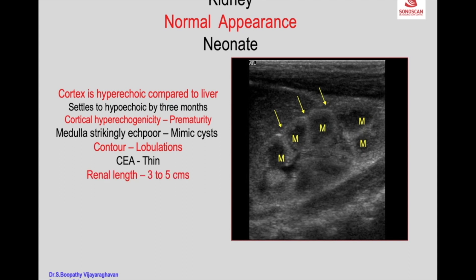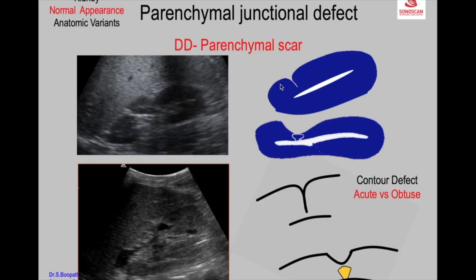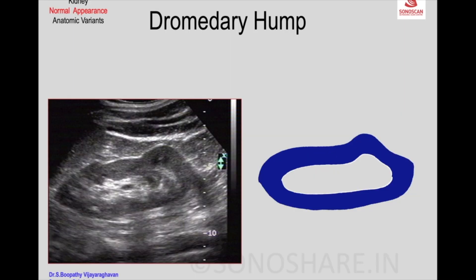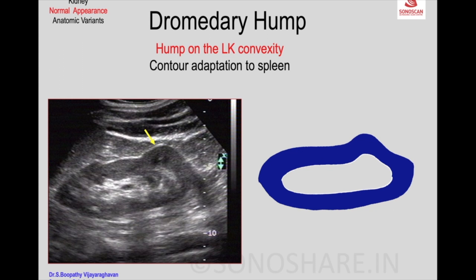The parenchymal thickness is uniform, with almost very thin fat in neonates. The renal length in neonates ranges from 3 to 5 cm, and there are nomograms for reference. Regarding the junctional defect, it is acute-angled, whereas in a parenchymal scar it is obtuse. Caliceal blunting: the underlying calyx is normal, but there will be blunting of the calyx as shown in the schematic. The hump on the left kidney convexity is a contour adaptation to the spleen, and the differential diagnosis is a mass.